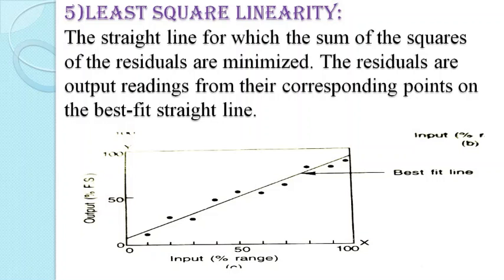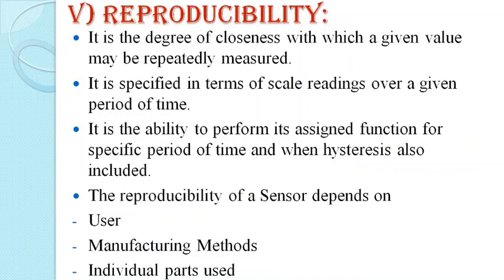The fifth type of linearity is least squares linearity. The straight line is one for which the sum of the squares of the residuals is minimized. The residuals are the output readings from their corresponding points on the best-fit straight line. The diagram shows how least squares linearity fits the straight line based on the residual output readings at their corresponding points.